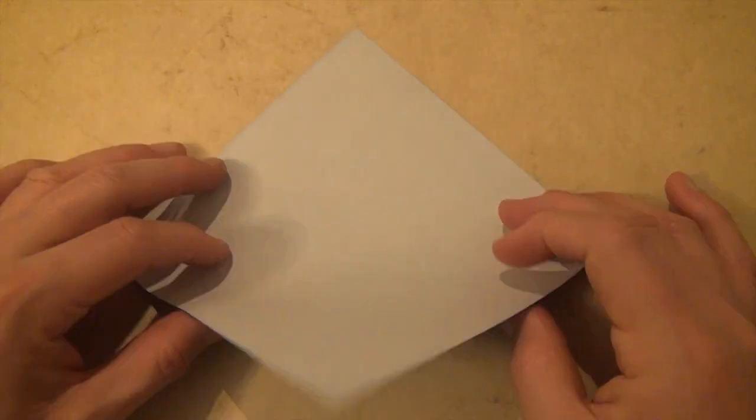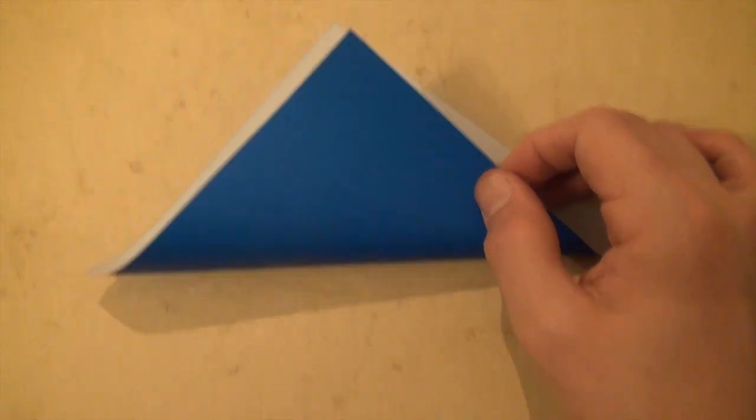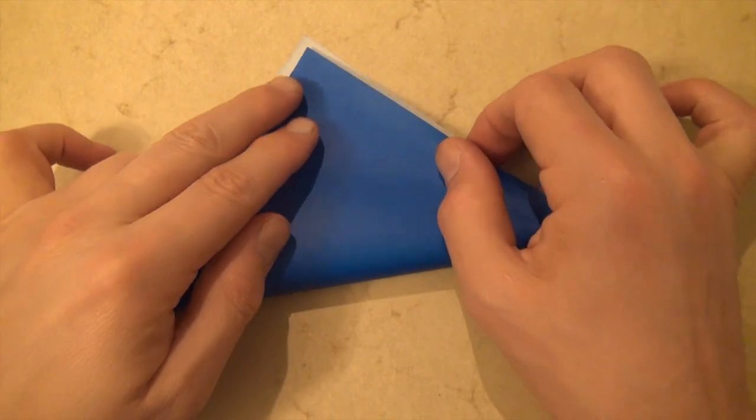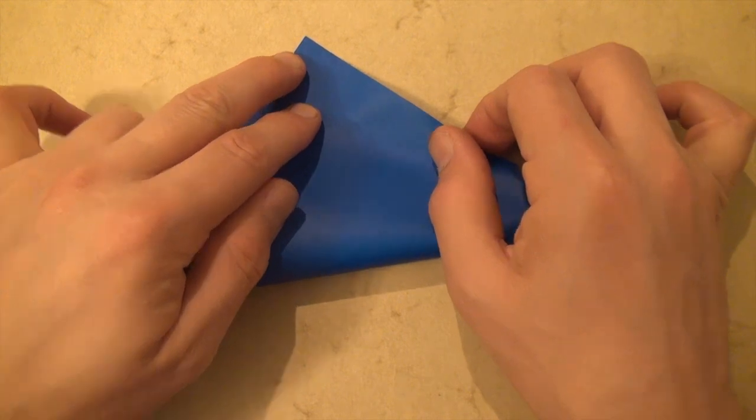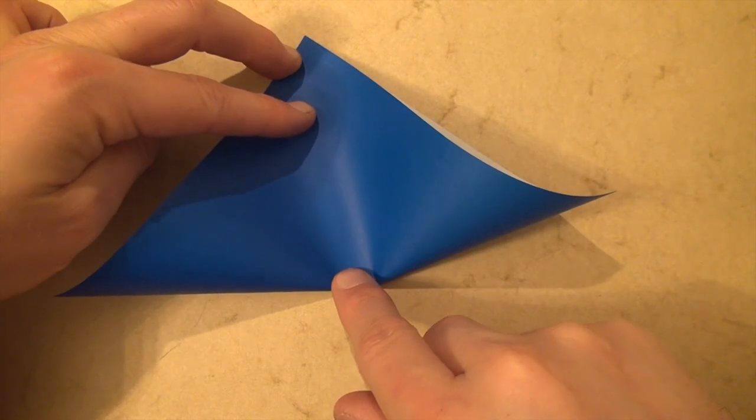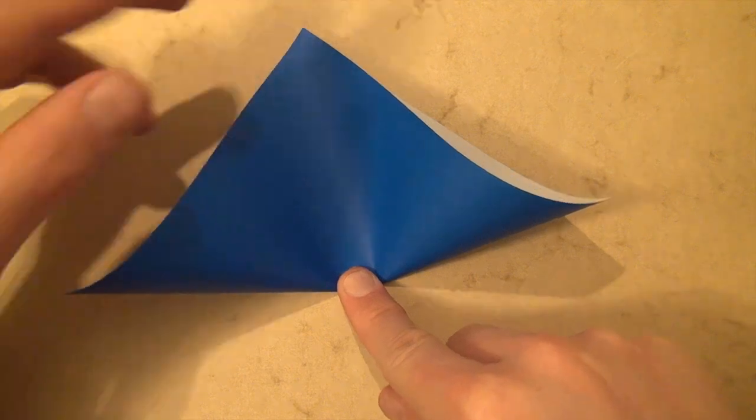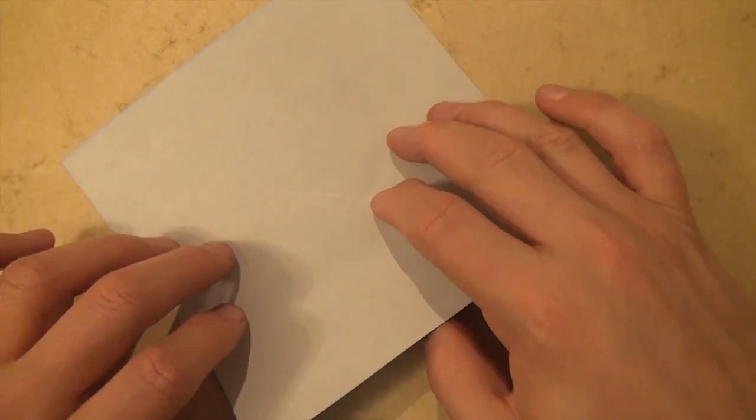Let's valley fold diagonally in half, but don't actually crease it. Just line up the corners and put a little pinch right in the middle. Just press down right there. We just want to find the center of the square.